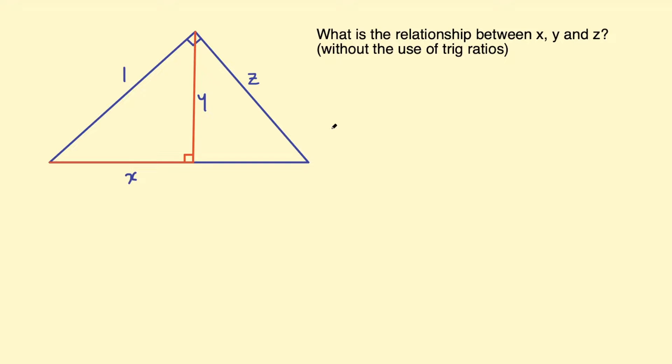To show this geometrical understanding I'll be using these two right angle triangles here. I've written here what is the relationship between x, y, and z - these lengths - and I don't want to use the trig ratios because I want to show that relationship, so I don't want to use them in my proof.